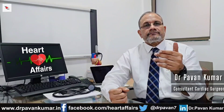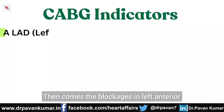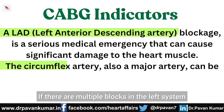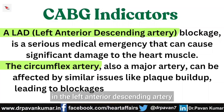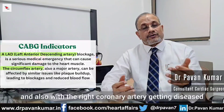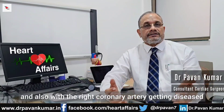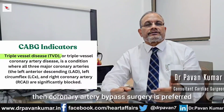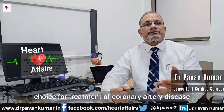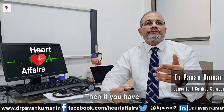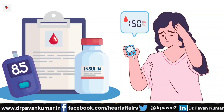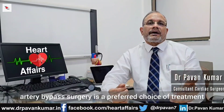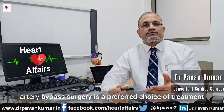The next indication is blockages in the left anterior descending artery along with the circumflex artery, and also with the right coronary artery diseased — this is triple vessel disease, and coronary artery bypass surgery is the preferred choice. Additionally, if you have diabetes and the disease is diffuse in nature due to diabetes, coronary artery bypass surgery is again the preferred treatment.